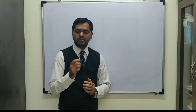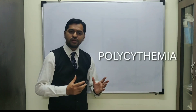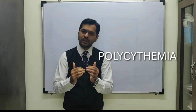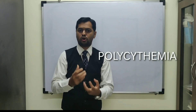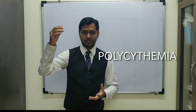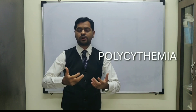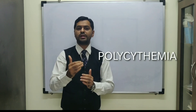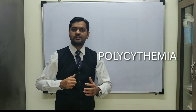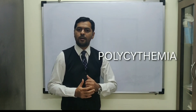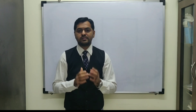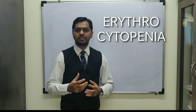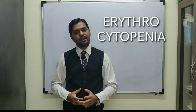An increase in RBC count is known as polycythemia. People at high altitudes experience a 10% increase in RBC count as a normal physiological response to hypoxia due to low air pressure. A sudden abnormal increase is called polycythemia. A decrease in RBC count is known as erythrocytopenia, which can result in anemia due to hemorrhage or other disorders.